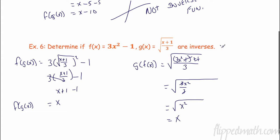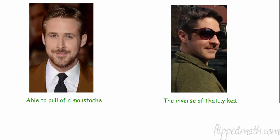So these are indeed inverse functions. One caveat: this only works for a specific domain — where y is greater than zero — because if you included all possible y values, the graph would fail the function test. That's a caveat that sometimes comes up. And on a lighter note, Ryan Gosling pulls off a mustache well; the inverse — Mr. Brust — not so much, especially with those female-style glasses.